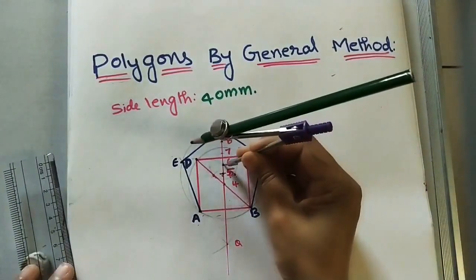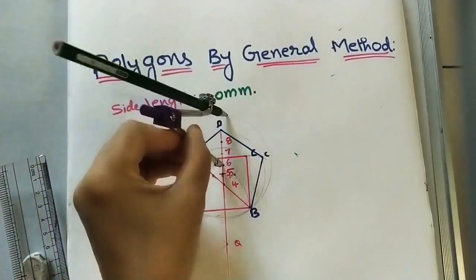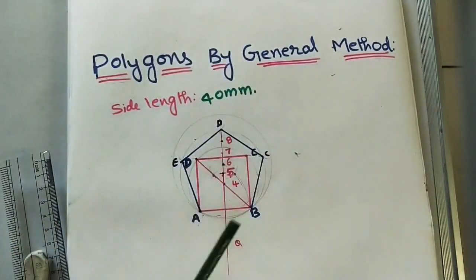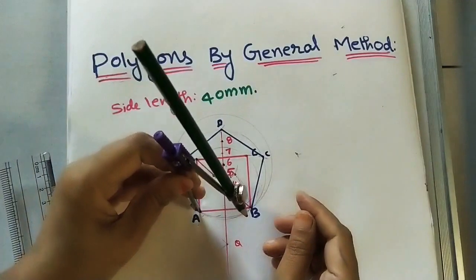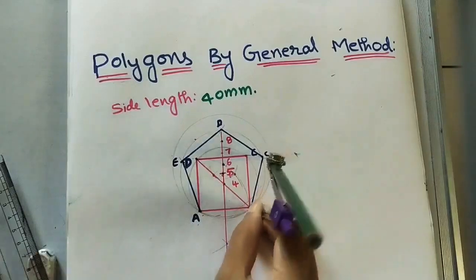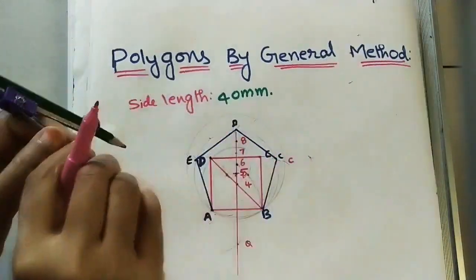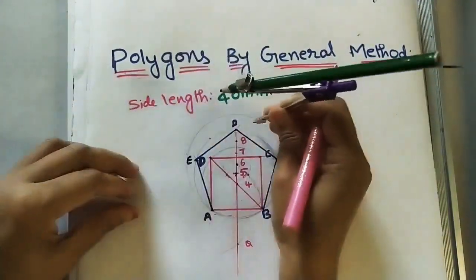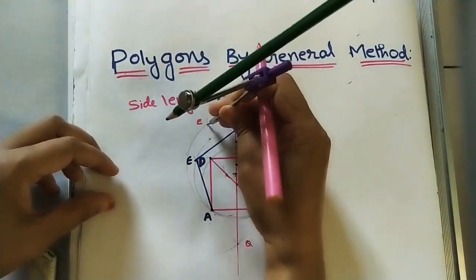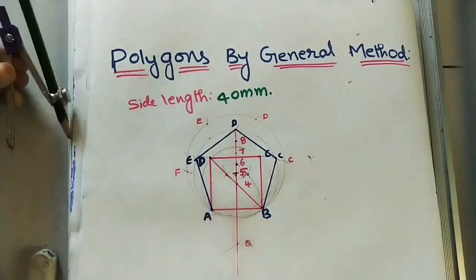For the hexagon, take 6 as center with 6A as radius and draw another circle. Divide this circle into six equal parts. AB is one side of the hexagon. Using compass arcs from each point, mark points C, D, E, and F around the circle. Join all the points to complete the hexagon.